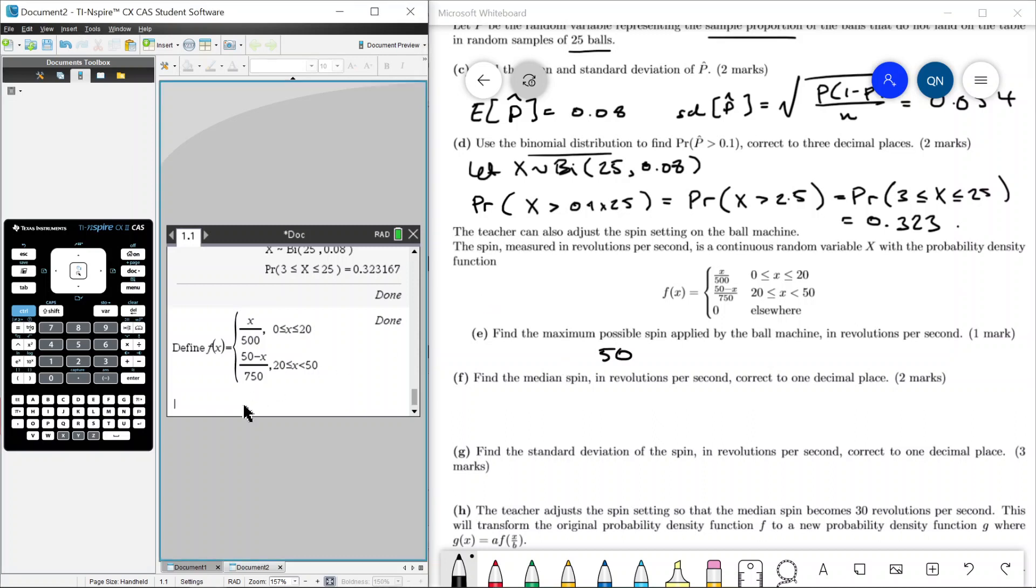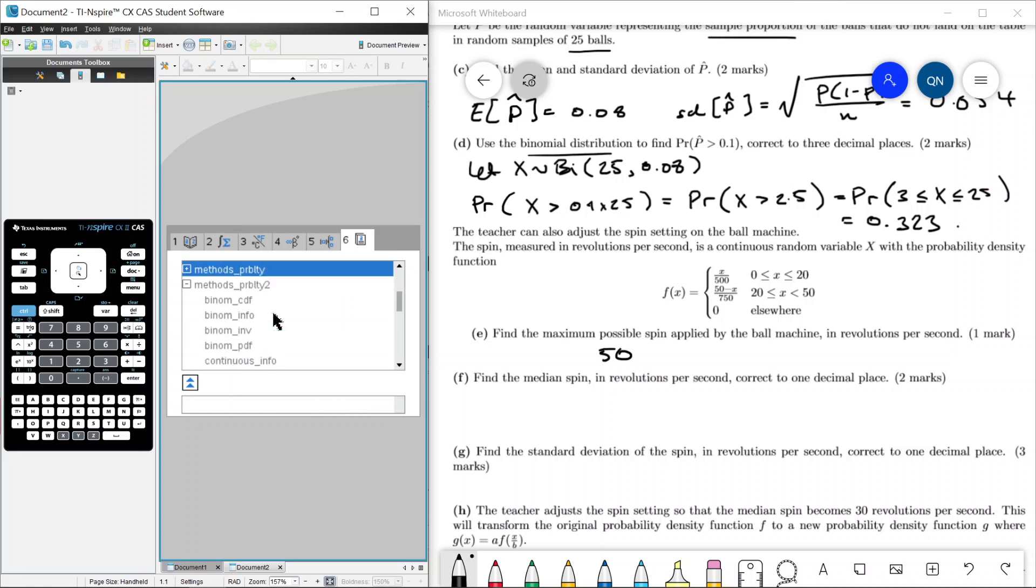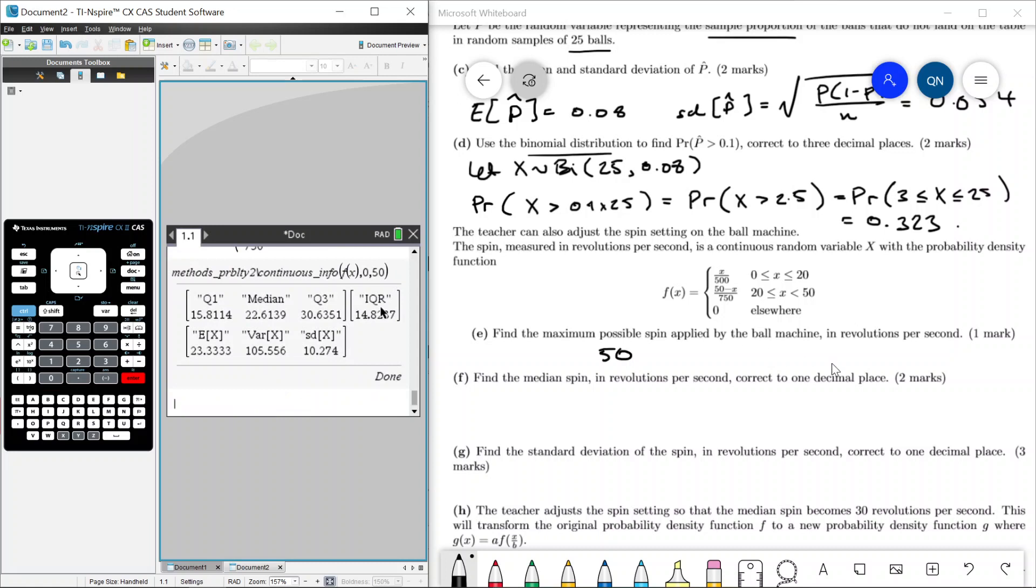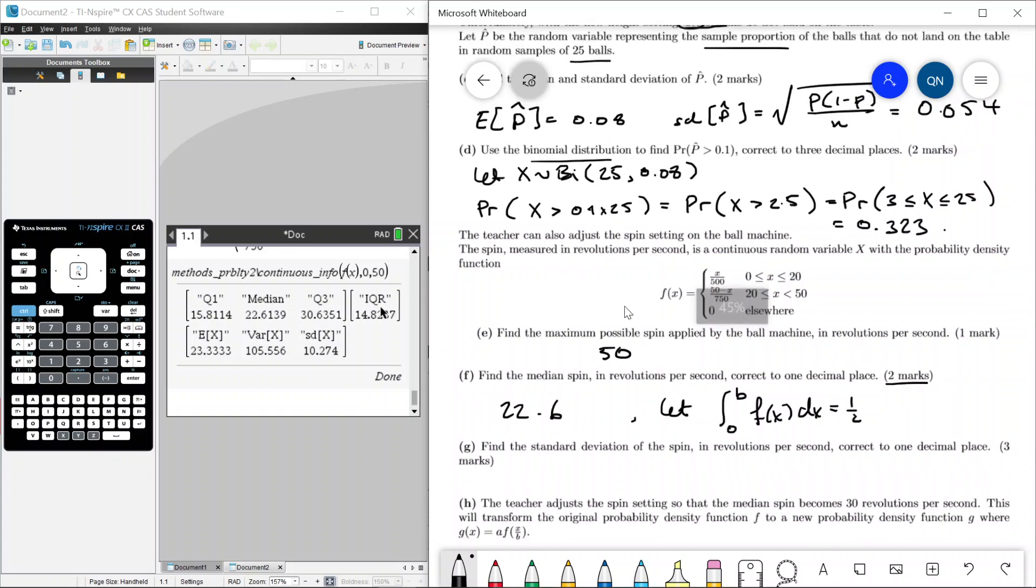Find the median spin. To find the median, let's use another program. This one I actually put onto probability 2, but that's because of the new updates. So if you have the updated version, then continuous info is in here, so you can just use the usual probability folder. So continuous info, and we're going to plug in our f of x, comma. What's the domain of the parts that's not zero? It's from 0 to 50. And we can get the median which is 22.6 correct to one decimal place. If you want to show working out, then you can let the integral from 0 up to some value b of f of x dx to be equal to a half and then solve for b on the CAS or something like that, and you should be able to get 22.6.